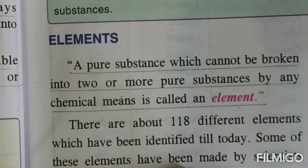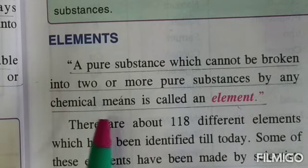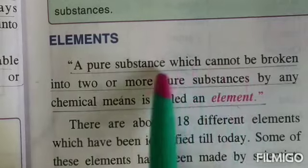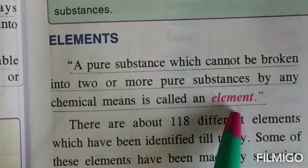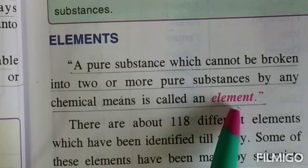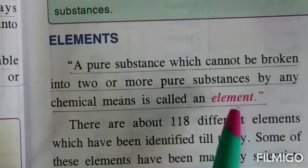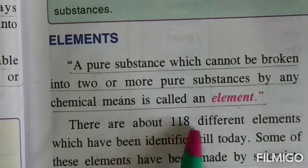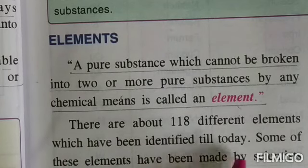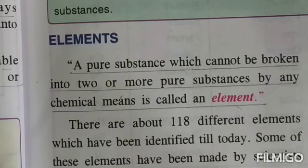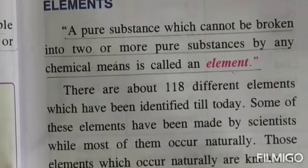So B, O, O, and K are the alphabets of the word 'book.' In the same way, in chemistry, the smallest thing that cannot be broken into anything simpler is known as an element — like gold, silver, iron, oxygen, and hydrogen. These are all elements which cannot be broken down further. In all, there are about 118 different elements identified so far. Some have been made by scientists while most are naturally occurring.